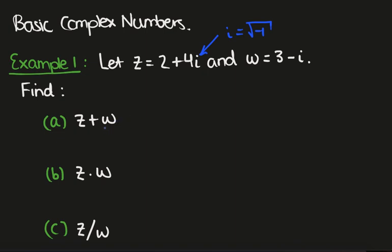The first thing we want to do is calculate z plus w. We're going to add the real parts together, so we have 2 plus 3. Then we add the imaginary parts together, giving us 4 minus 1i. Adding these together we get 5 plus 3i.